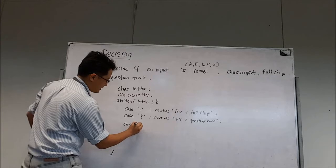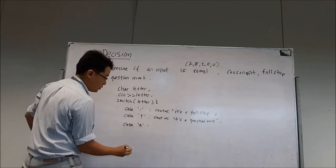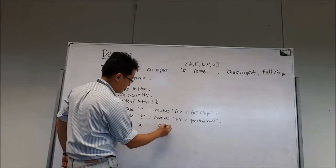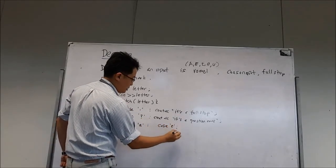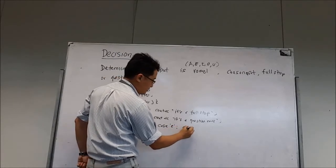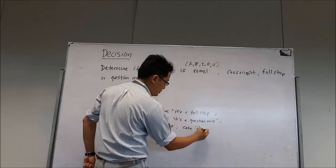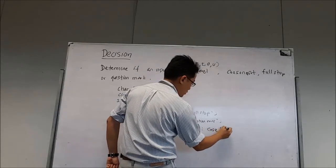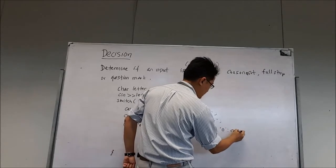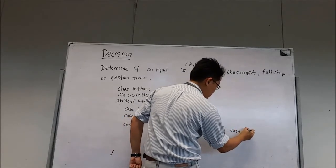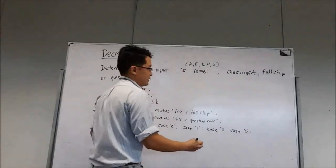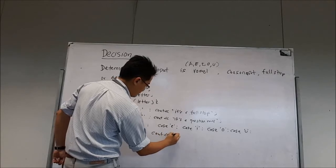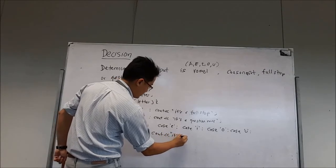Okay then I have it case A. Now due to space I just simply put there case A, case E, you see I'm not semicolon this is colon, case I, case O, case U. It's a vowel, C out it's a vowel.